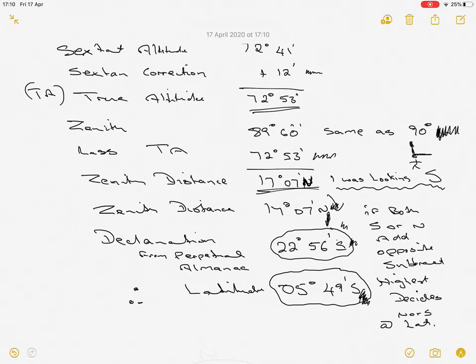Okay. How do I decide whether this is south? Well, if they were both north and north, this would be north. If they were both south and south, it would be south. But for the purpose of this exercise, I take the larger number and I work and I apply that. So the larger number means I'm still in the southern hemisphere.